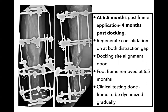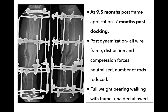These are images at four months post-docking and 6.5 months post-frame application. One can see good regenerate consolidation, and docking site union is also in progress. The foot frame was removed at this point, docking site alignment is good, clinical testing was done, and the frame was dynamized. In the process of dynamization, we reduce and neutralize the distraction and compression forces, reduce the number of rods, and remove all half pins gradually. At 9.5 months post-frame application, the patient had good regenerate consolidation, good docking site union, and was fully weight-bearing with the frame; unaided walking was also achieved.